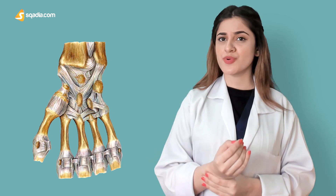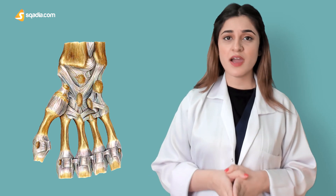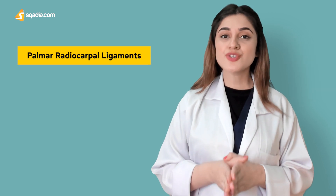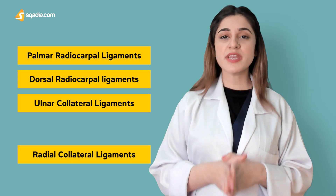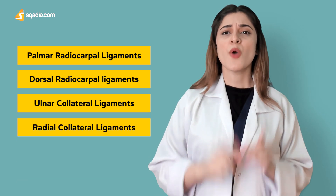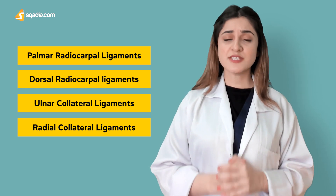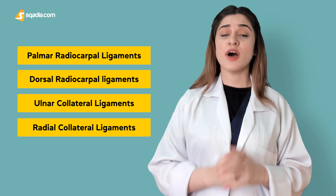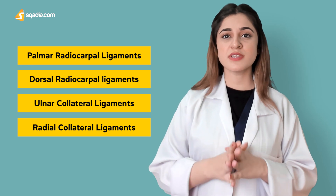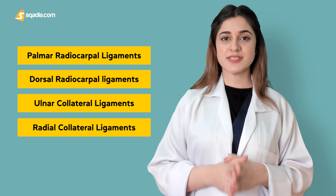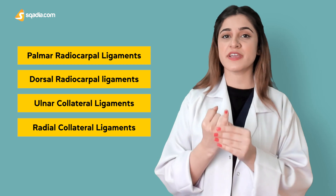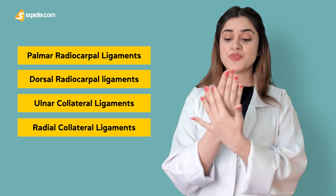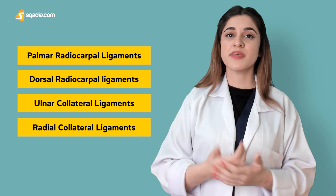In the case of a wrist joint, a set of four ligaments is important to know about: the Palmar Radiocarpal Ligament, the Dorsal Radiocarpal Ligament, the Ulnar Collateral Ligament, and the Radial Collateral Ligament. There is one ligament on the palmar surface, one on the dorsal surface, and two on each lateral side — the Ulnar Collateral Ligament towards the ulna or little finger, and the Radial Collateral Ligament towards the radius or thumb.